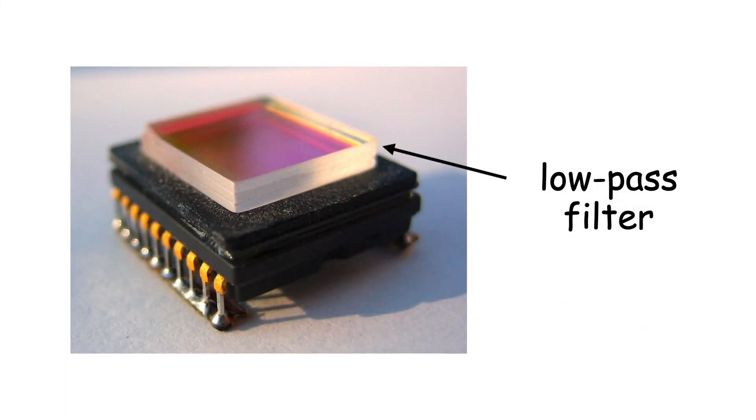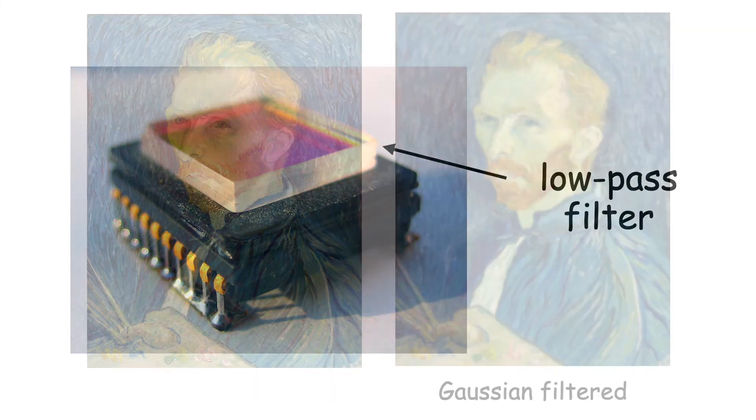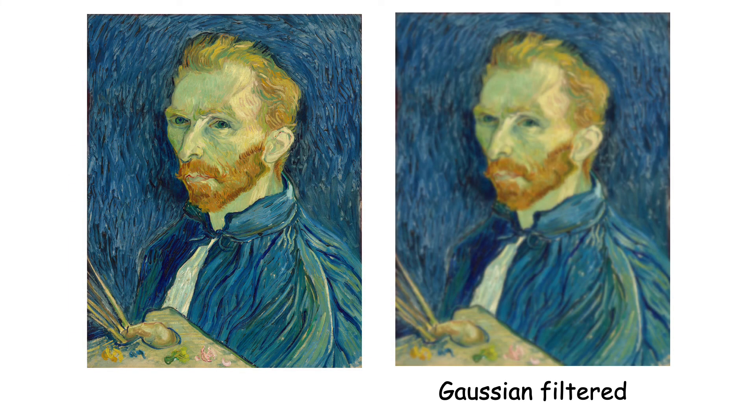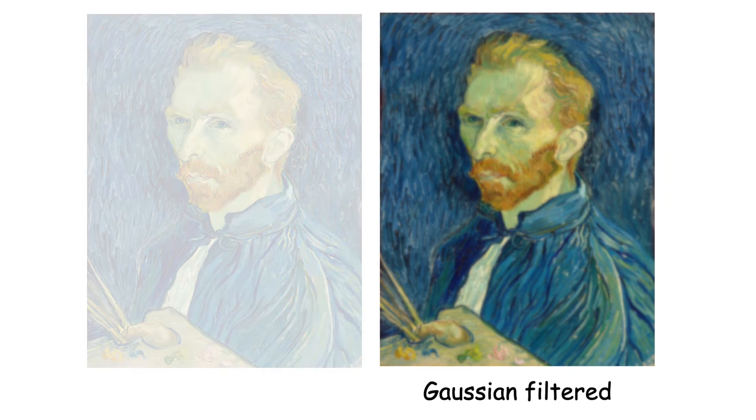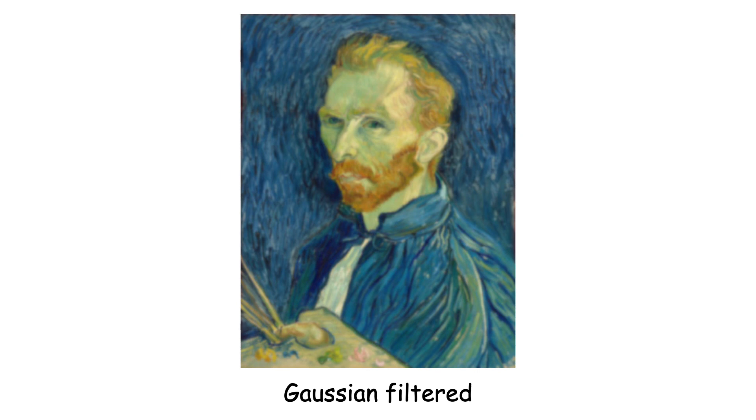The filter on the camera sensor performs an approximation to this low-pass filter by optically blurring the image. It effectively subtracts out the high frequencies before they hit the sensor. The Gaussian is also a form of a low-pass filter. It gradually attenuates higher frequencies instead of abruptly zeroing them out. And that's why Gaussian filtering an image before downsampling avoids aliasing.